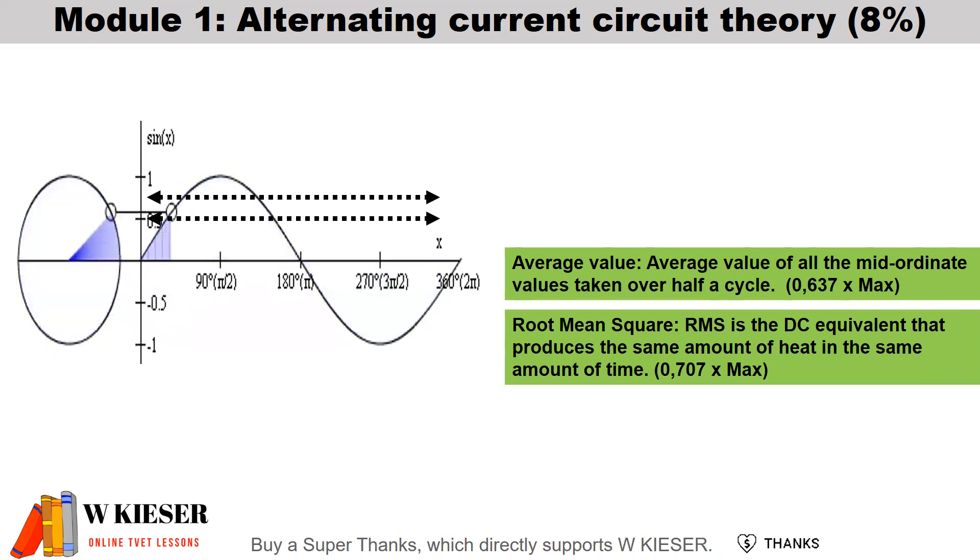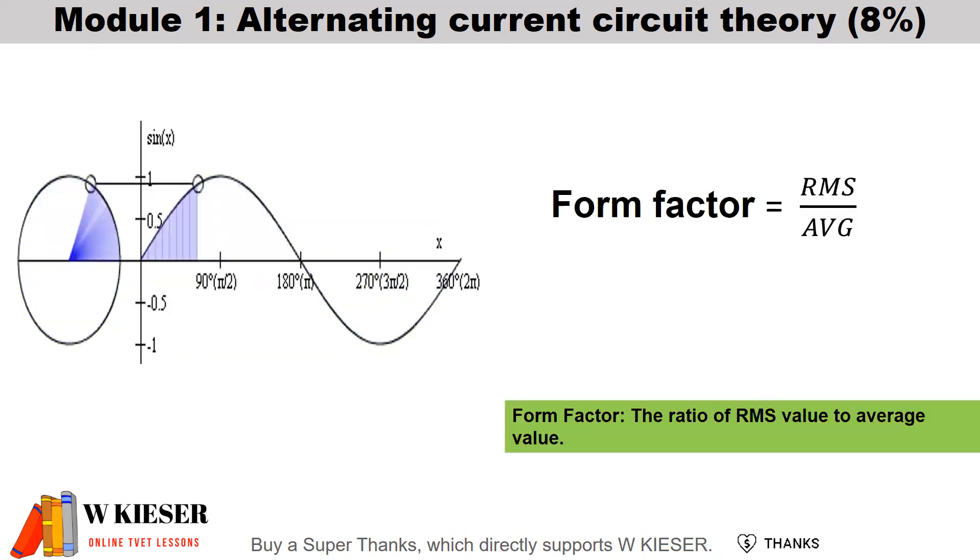RMS is abbreviated as root mean square, which is the DC equivalent that produces the same amount of heat in the same amount of time. To calculate that, it is 0.707 multiplied by the maximum value. To define form factor, it is the ratio of RMS to average, and a perfect sine wave would give us a form factor of 1.11.